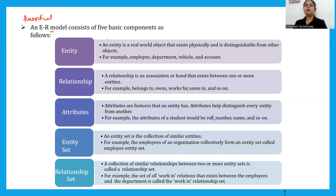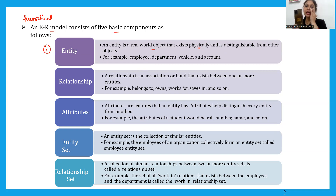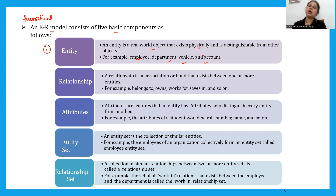Basically, an ERD model has five basic components. The first component is entity. An entity is a real world object that exists physically and is distinguishable from other objects. For example, a mobile phone has a physical existence — it has length, it has weight. We can also distinguish between an employee, a department, a vehicle, or objects like my laptop, my whiteboard, my chair.